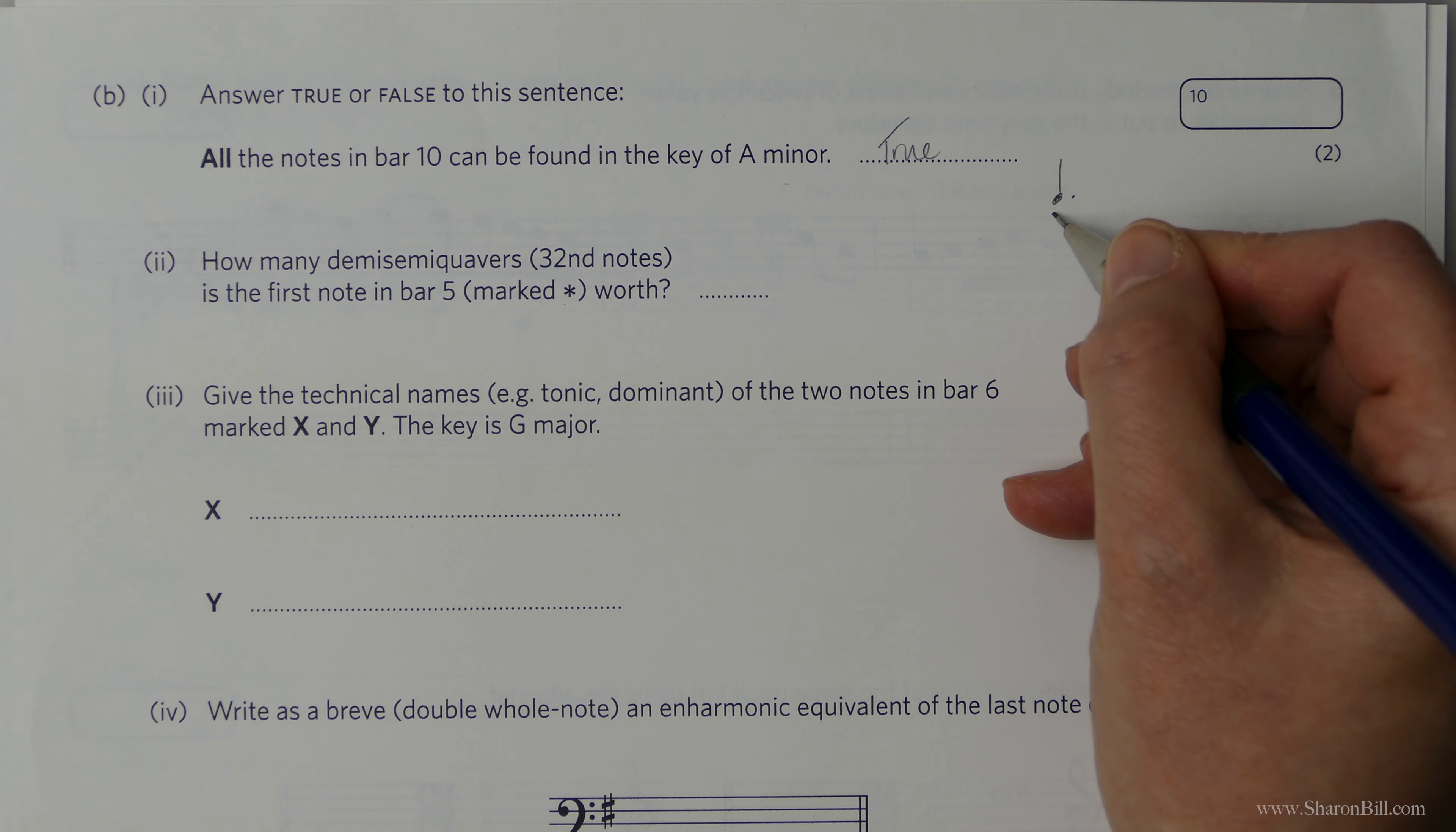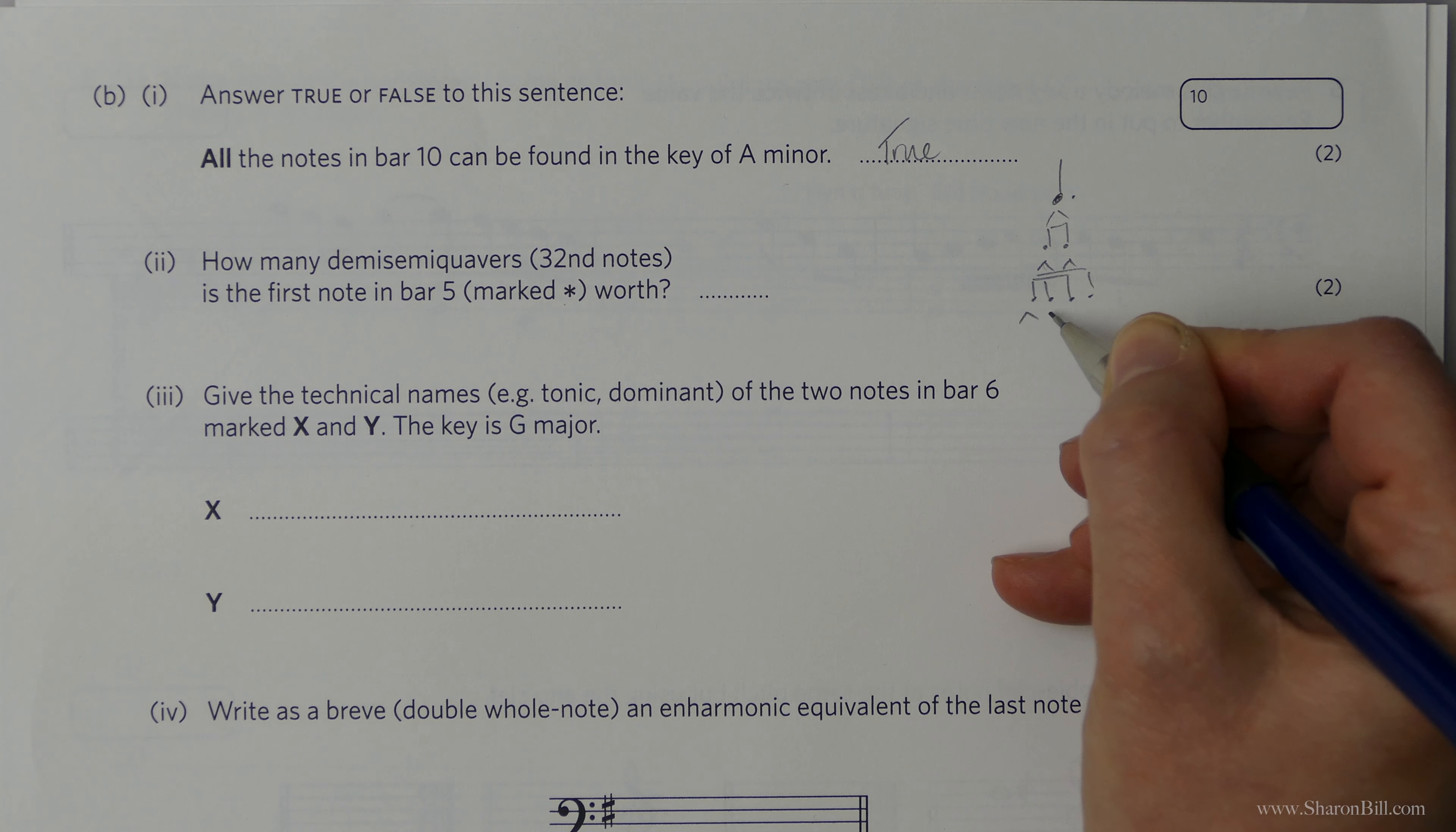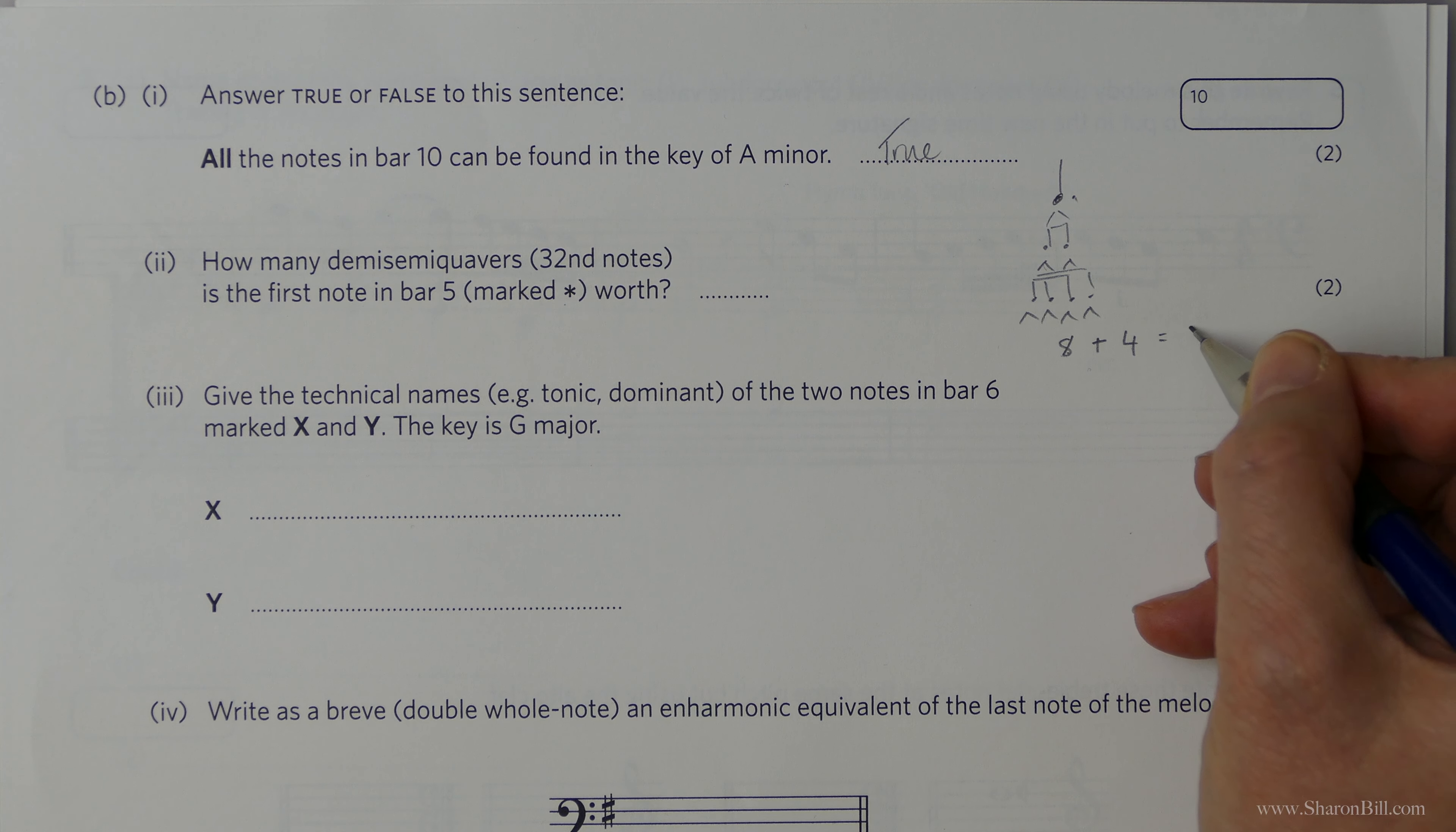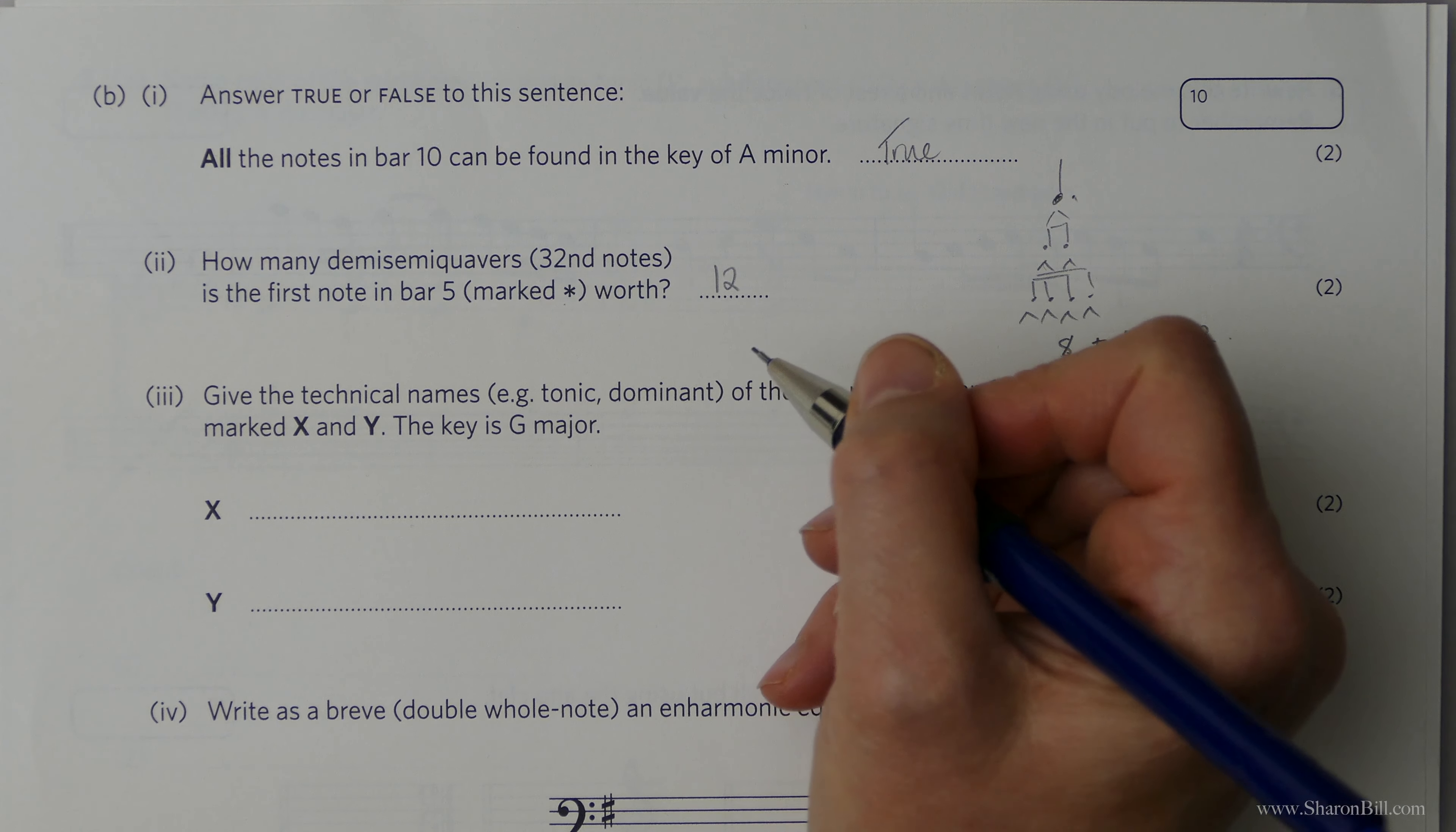So I'm going to ignore the dot just to save space for the moment. So a crotchet, a quarter note, divides into two quavers, which divides into four semiquavers, which divides again into eight demisemis, eight 32nd notes. So that's the crotchet, the quarter note. Plus the dot is half as long again. So half of eight is four. Added together it makes 12. So altogether that is 12 demisemiquavers, 12 32nd notes.